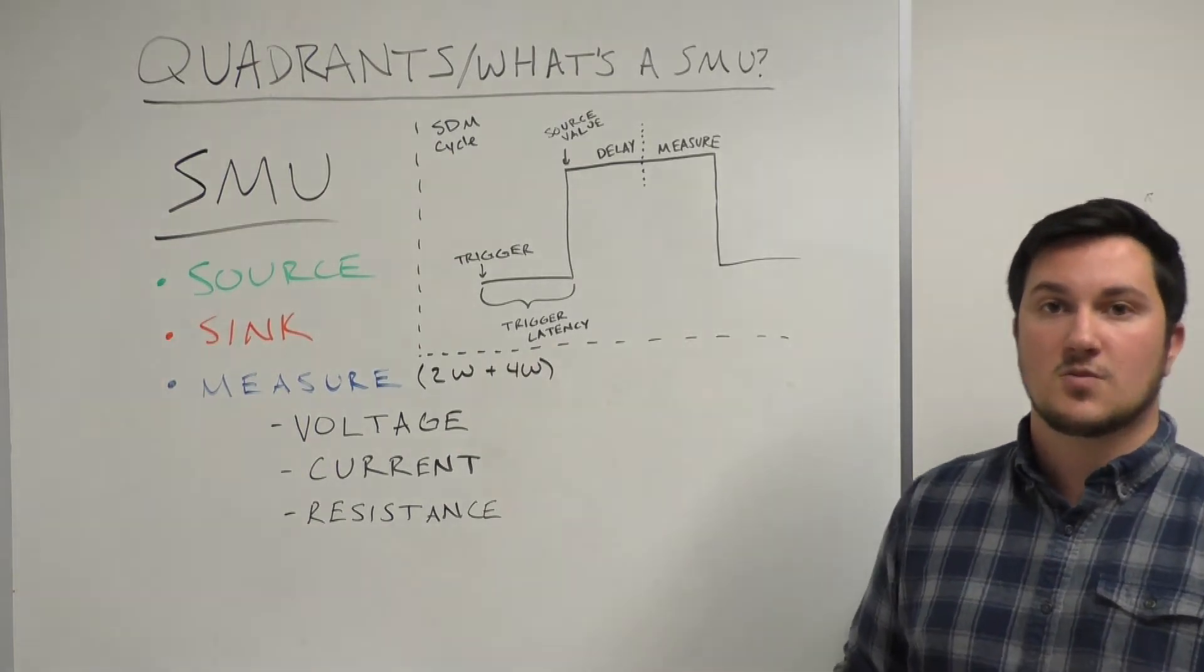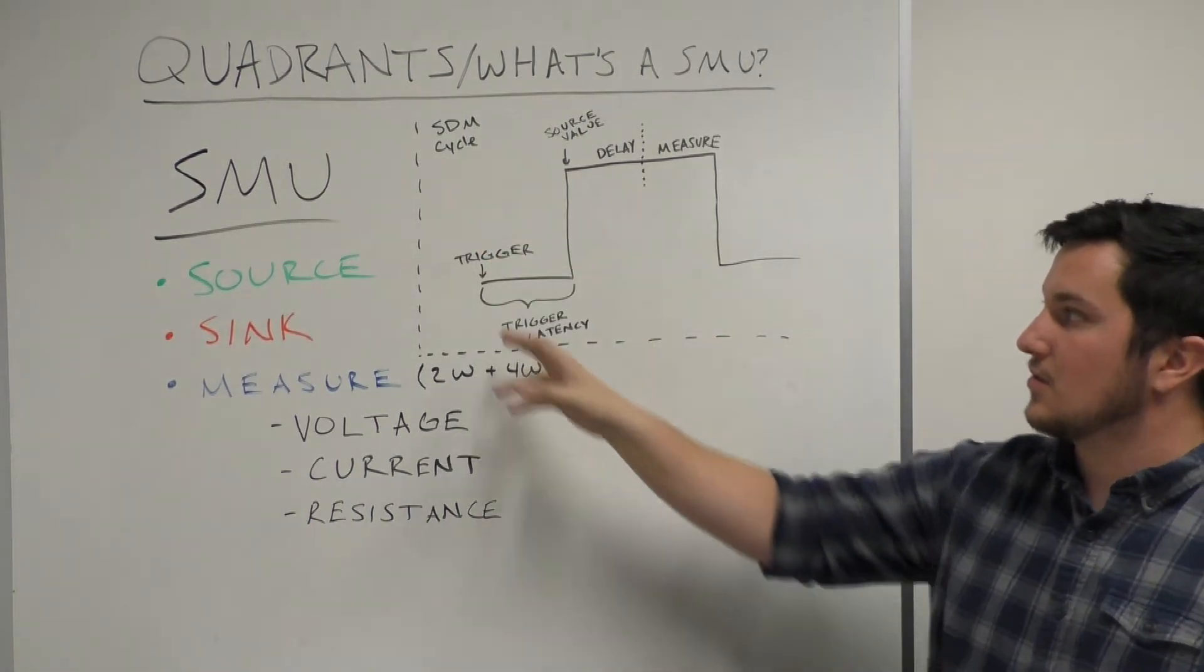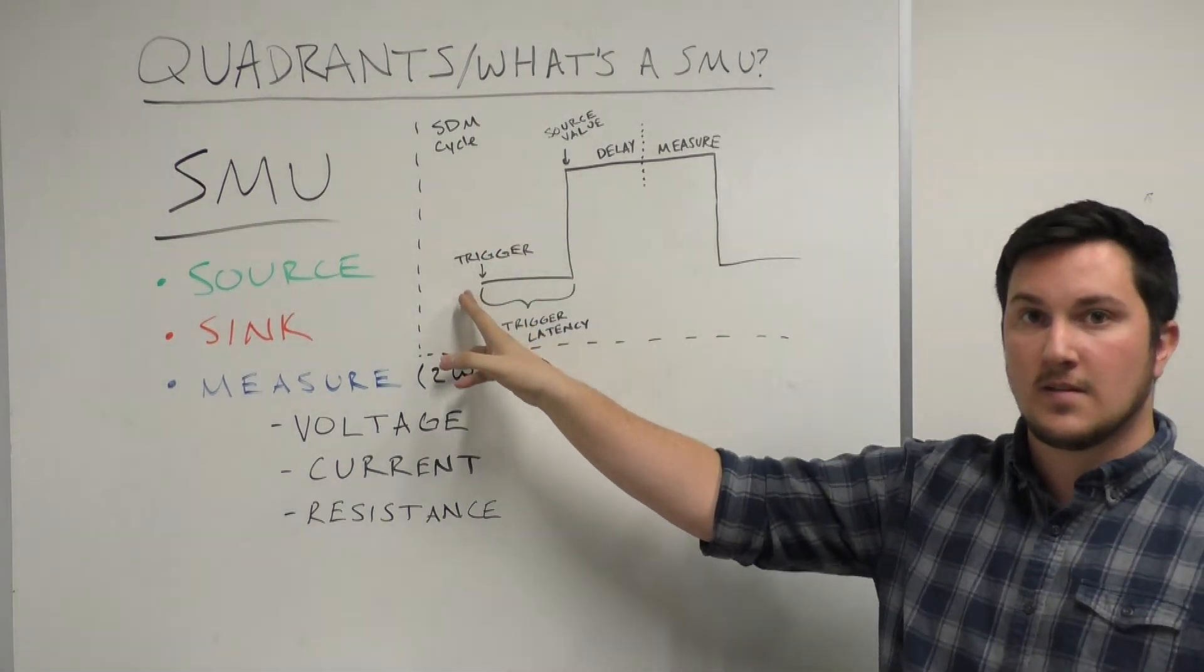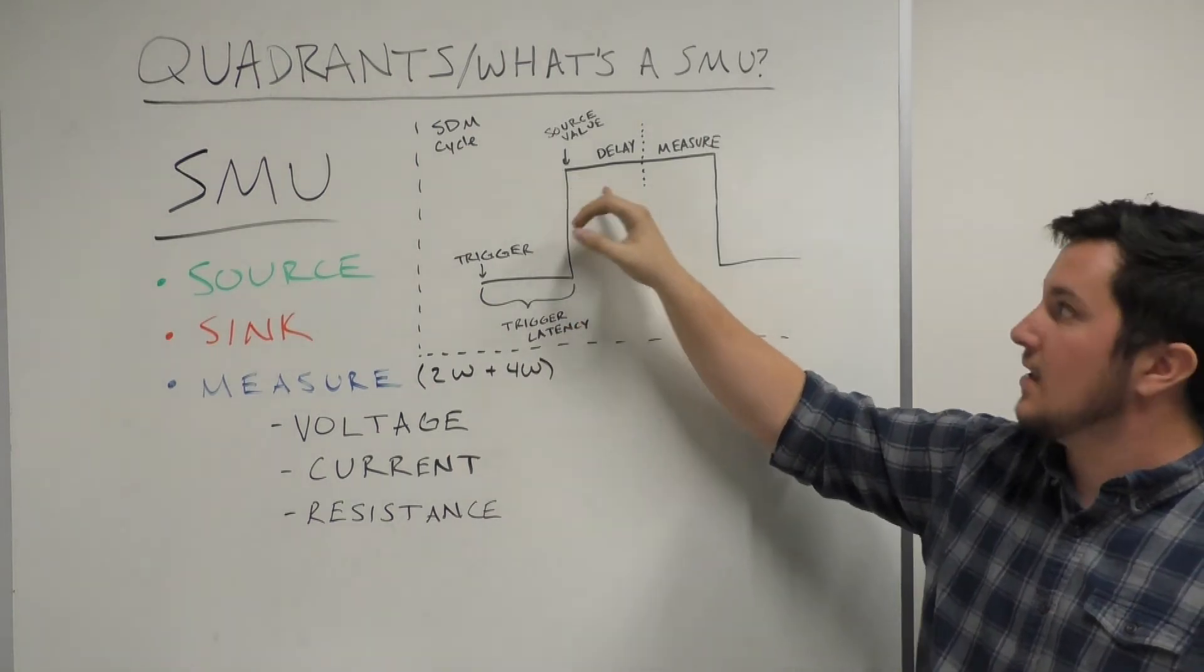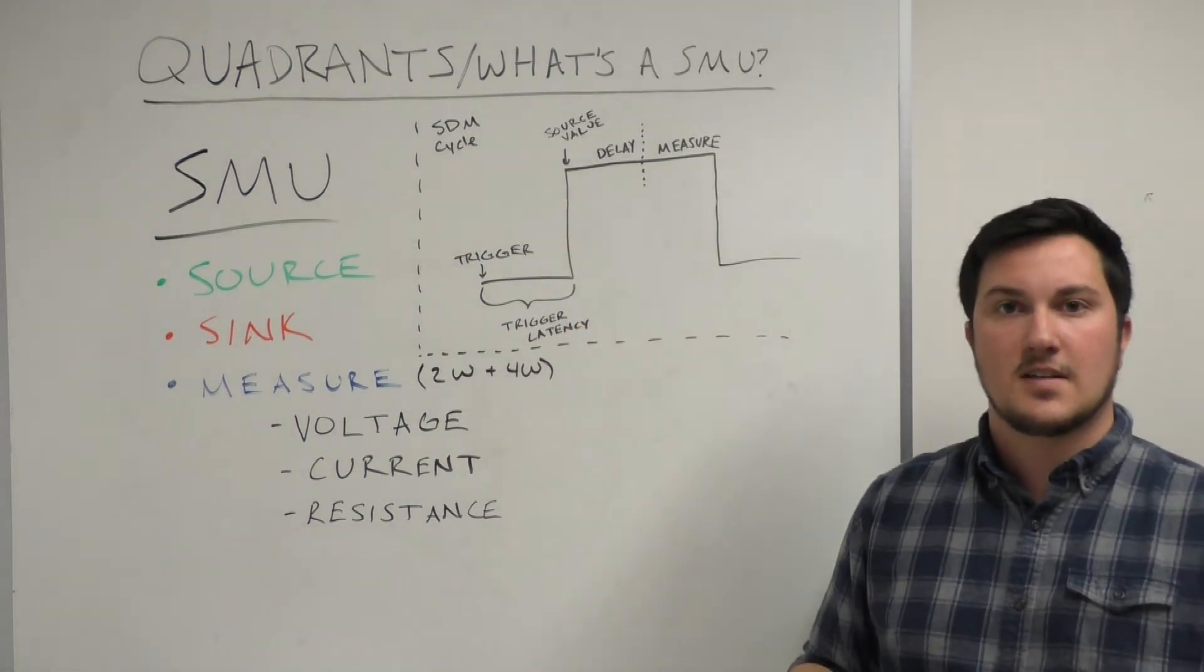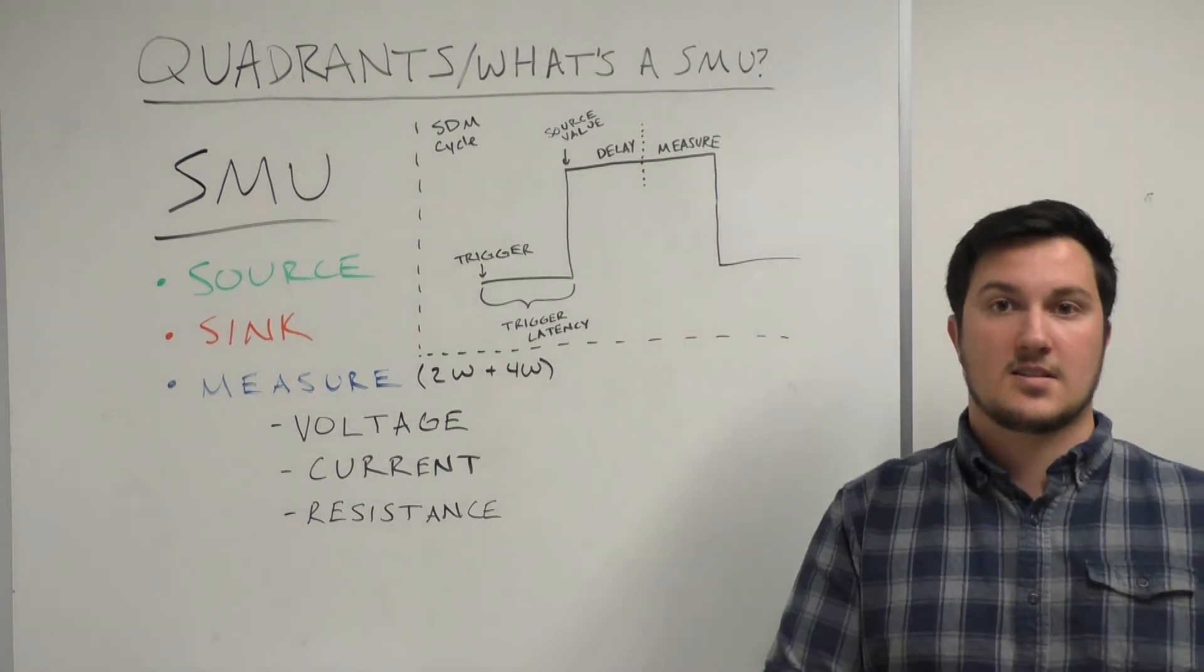The second is what we call a sweep, and this follows our source delay measure cycle. In this example, you will send a trigger to the instrument. There's some trigger latency before it outputs a source value. There will then be some delay time to provide some settling time before it performs a measurement, and then moves on to the next operation.